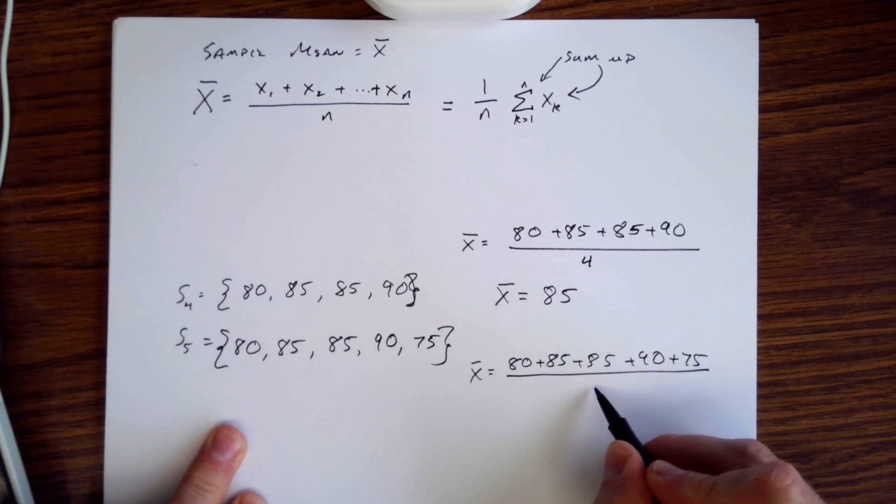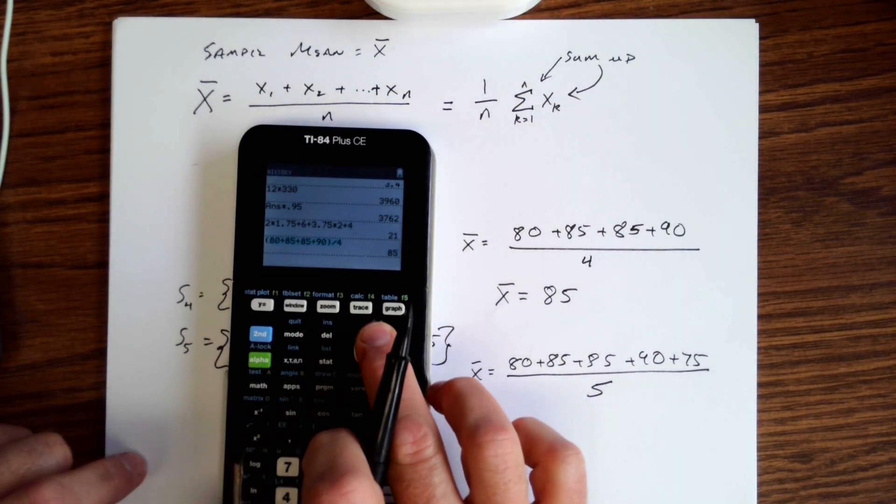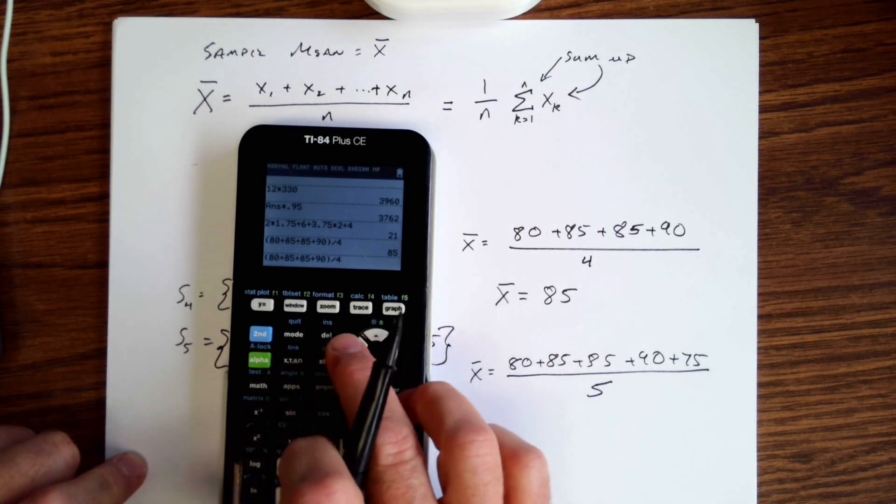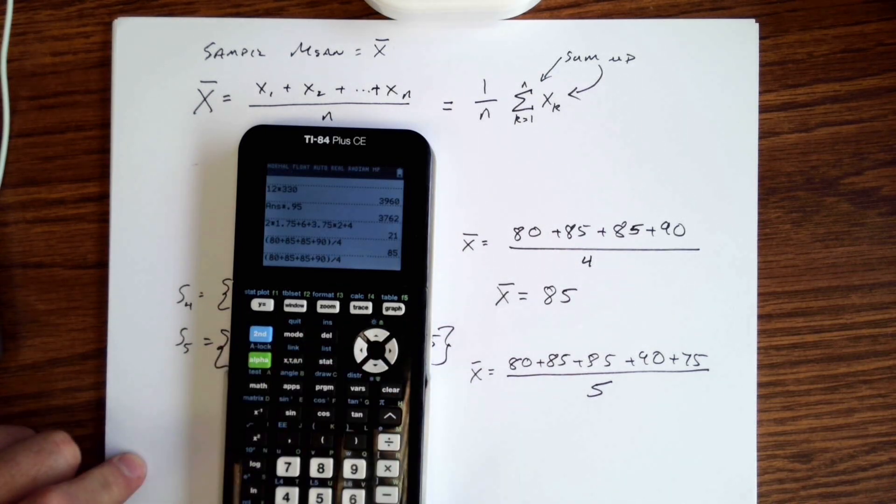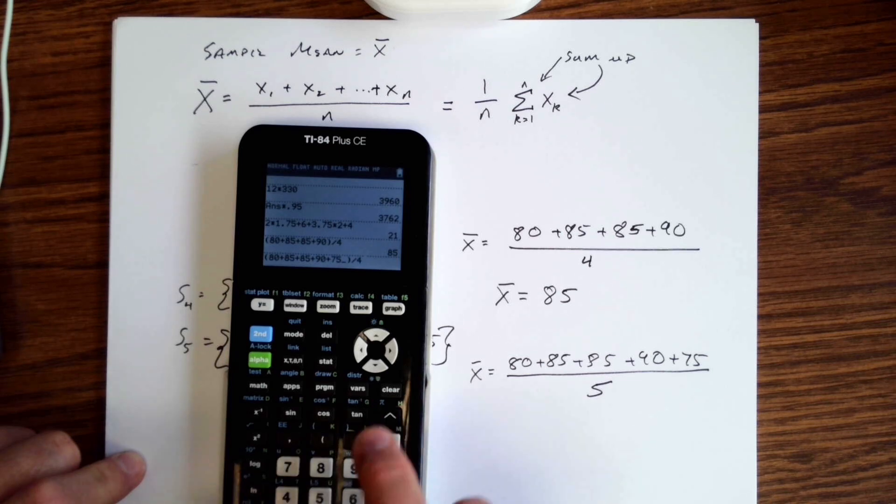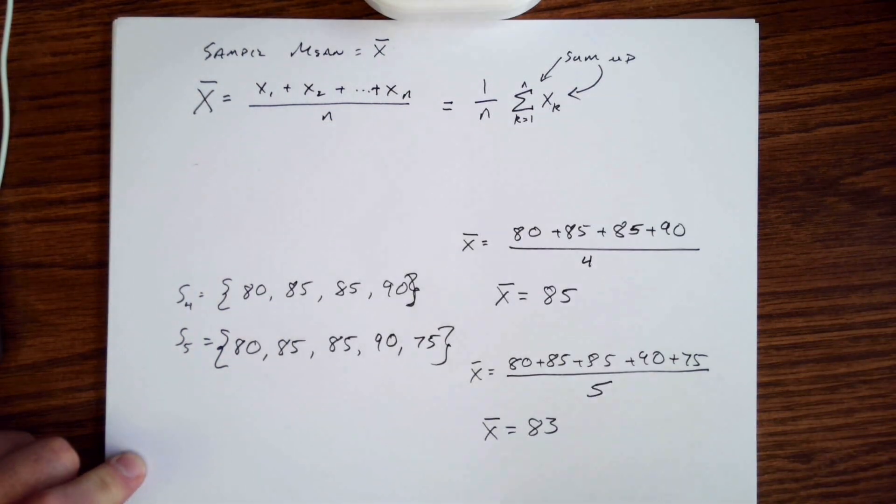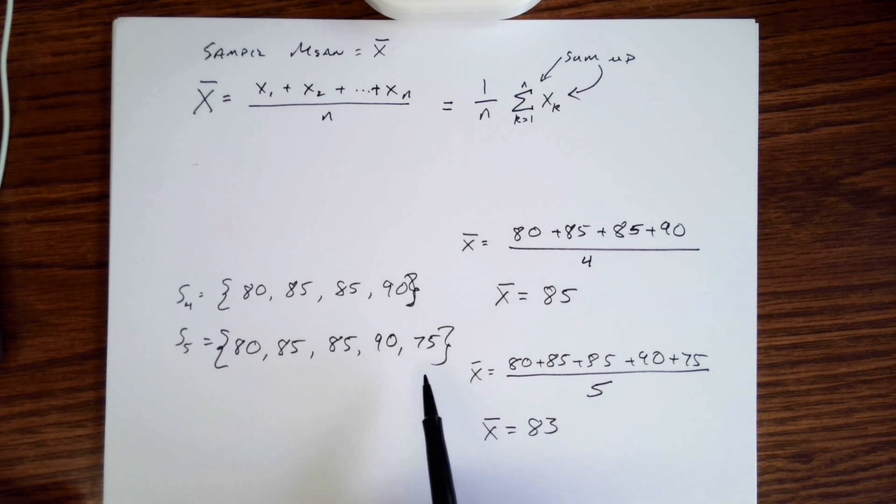What does that do? I can actually up arrow my calculator here, hit enter on that, and then simply insert—I just second delete right there on 84—and I'm going to add in my 75 right there. I've got my plus sign, and then I'm going to go over here and replace 4 with 5. I get that X bar is now 83, which makes sense. You would think the average would go down by getting a slightly lower score.